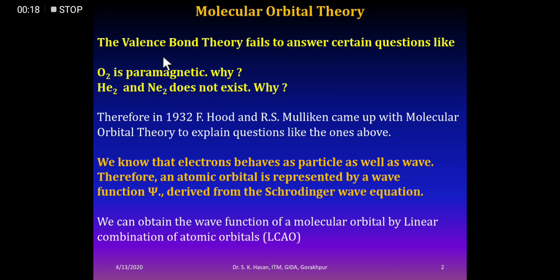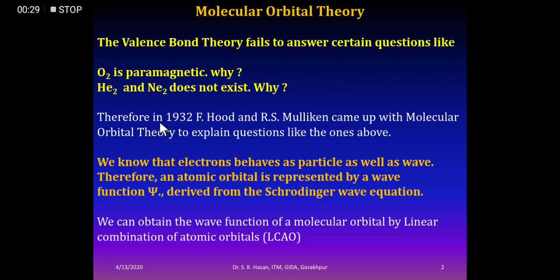Valence bond theory had questions it could not explain, such as why O2 is paramagnetic and why He2 and Ne2 do not exist. Therefore, in 1932, F. Hood and R.S. Mulliken came up with molecular orbital theory to explain questions like these.